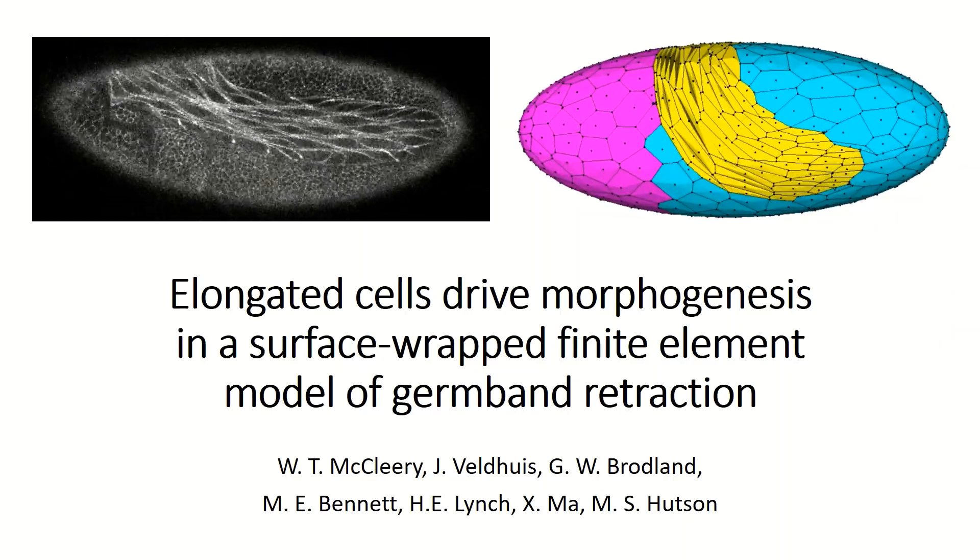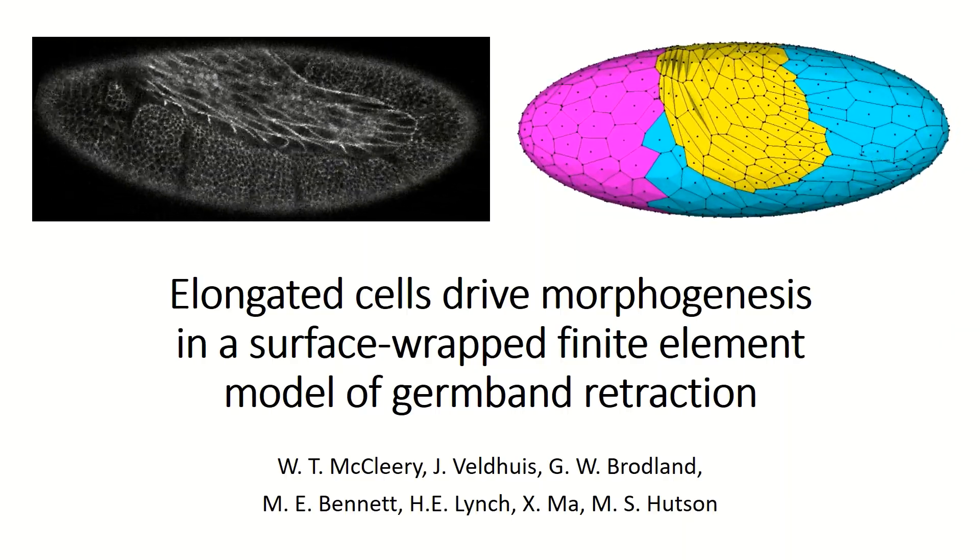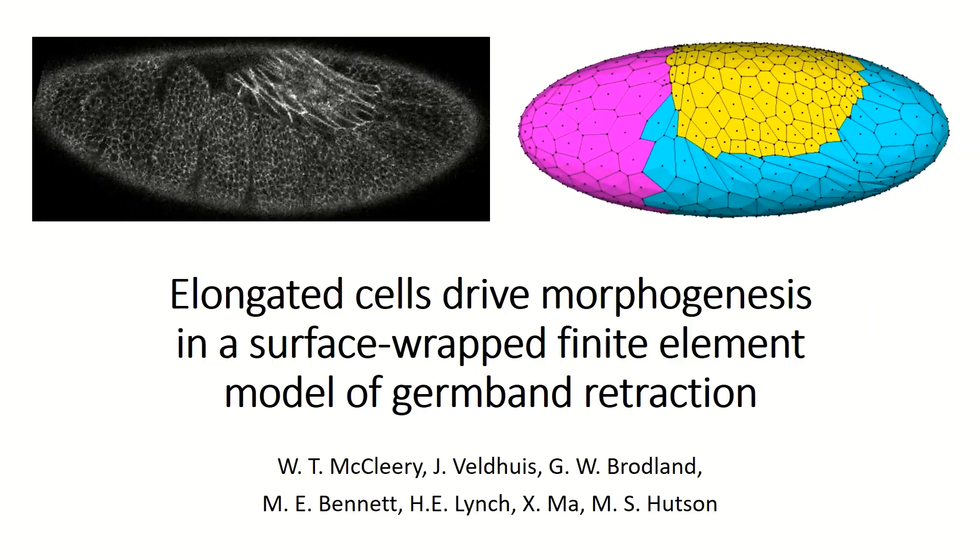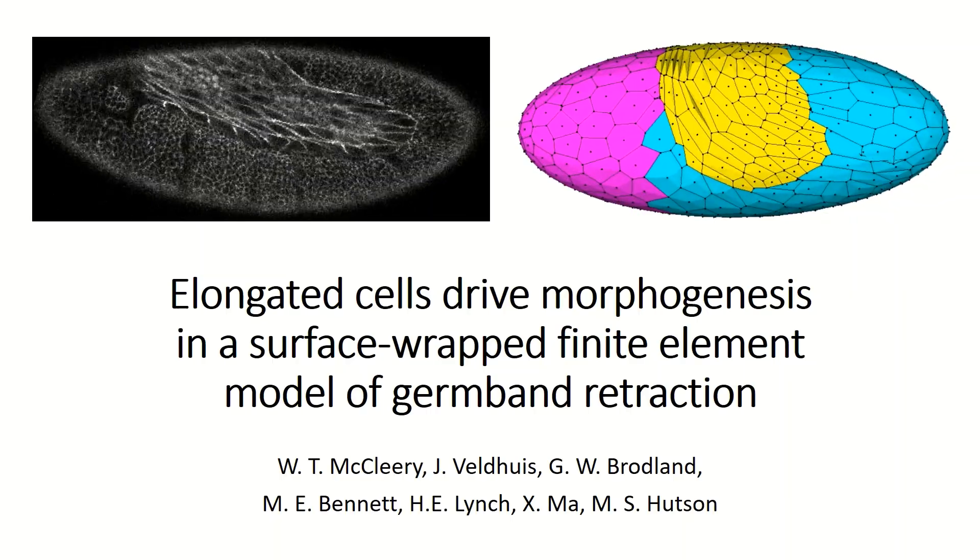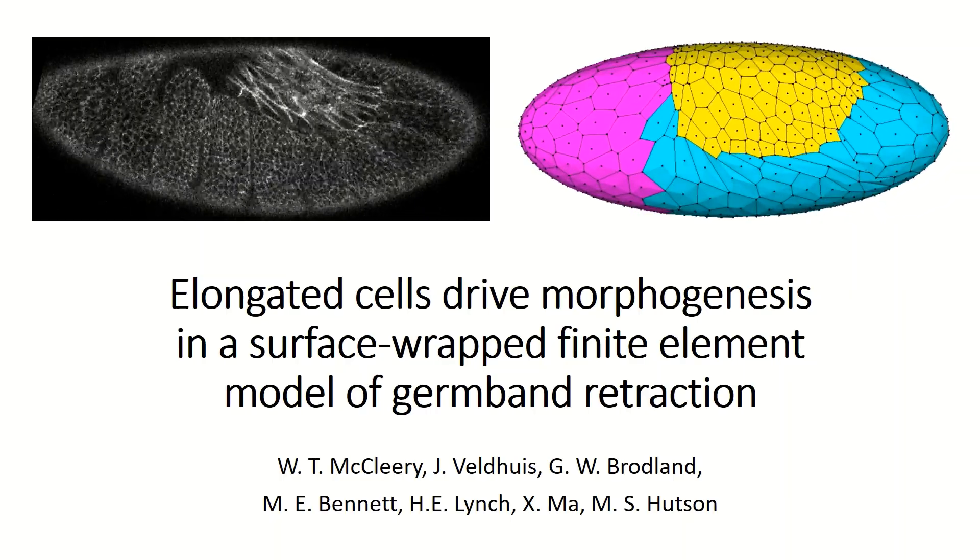We have built a computational model of the full fruit fly embryo to explore the links among cell-level forces, cell shapes, and tissue-level movements in one example of morphogenesis, known as germband retraction.